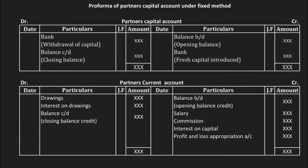Welcome back to the series on accountancy, chapter 2: accounting for partnership. In this video we are going to learn about the pro forma or format of partners capital account under the fixed method, and also the partners current account. In the fixed method we have to follow two accounts: the partners capital account and the partners current account.